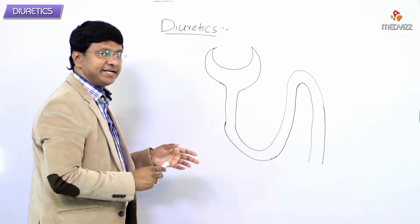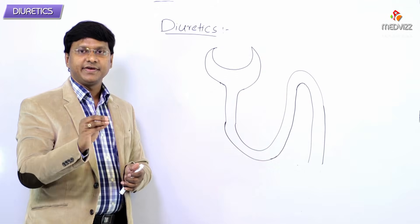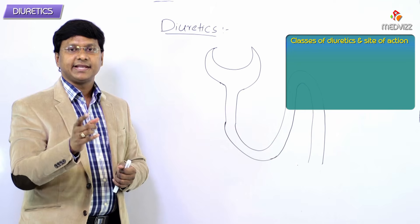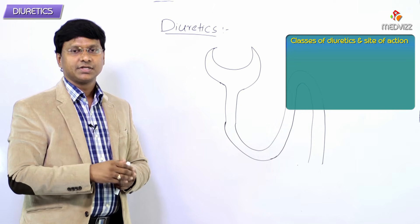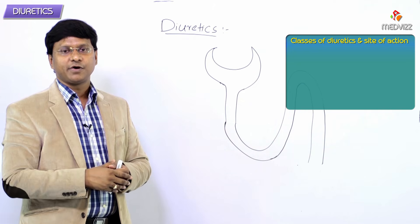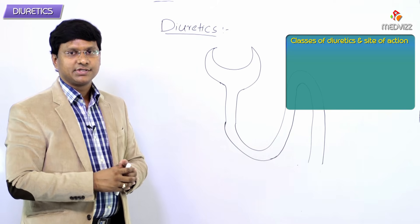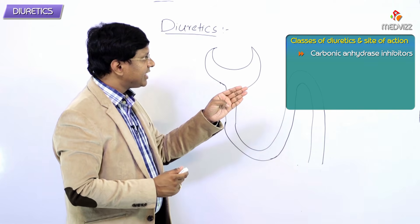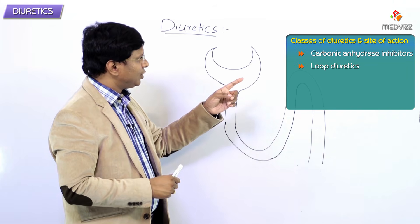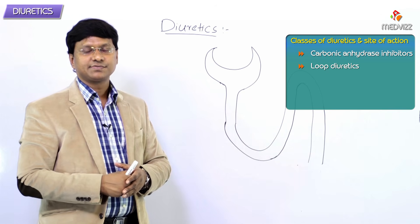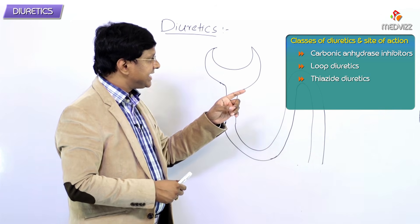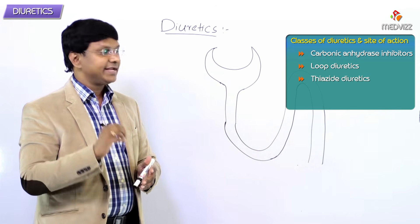Let me discuss the various classes of diuretics and their site of action. The first group is carbonic anhydrase inhibitors, then we have the loop diuretics, and then we have the thiazide diuretics.